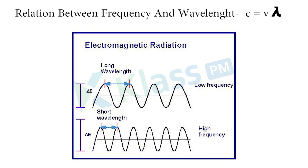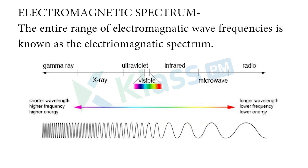The relation between frequency and wavelength is: C = Vλ, where V is the frequency and λ (lambda) is the wavelength. The electromagnetic spectrum is the entire complete range of electromagnetic wave frequencies.